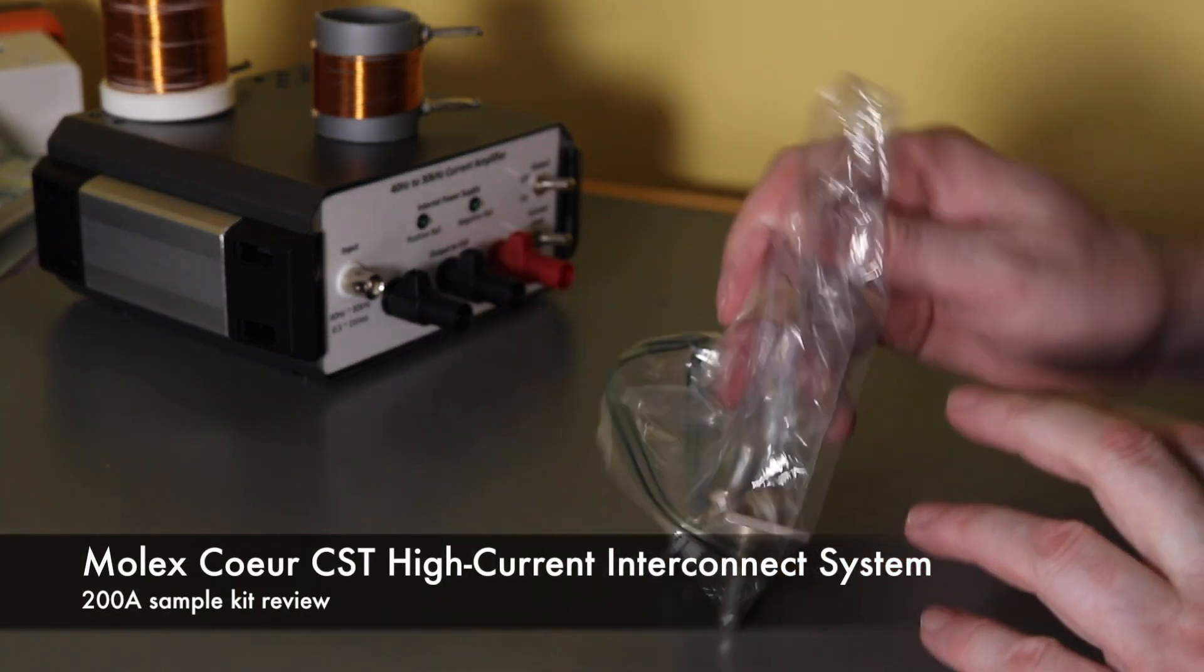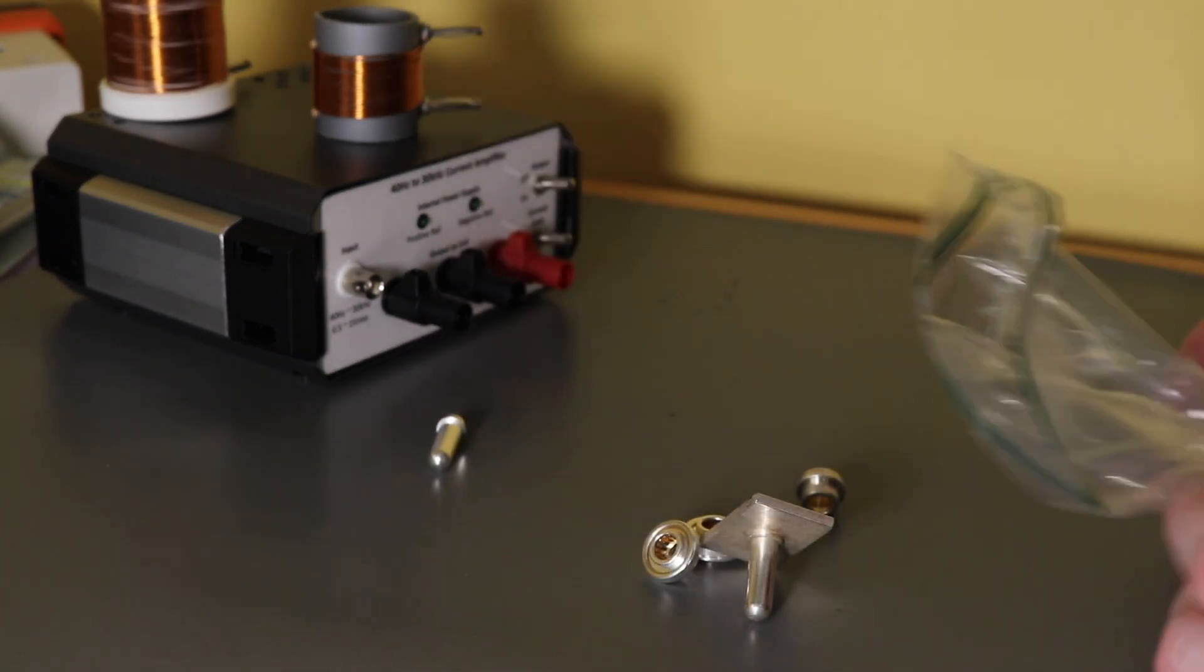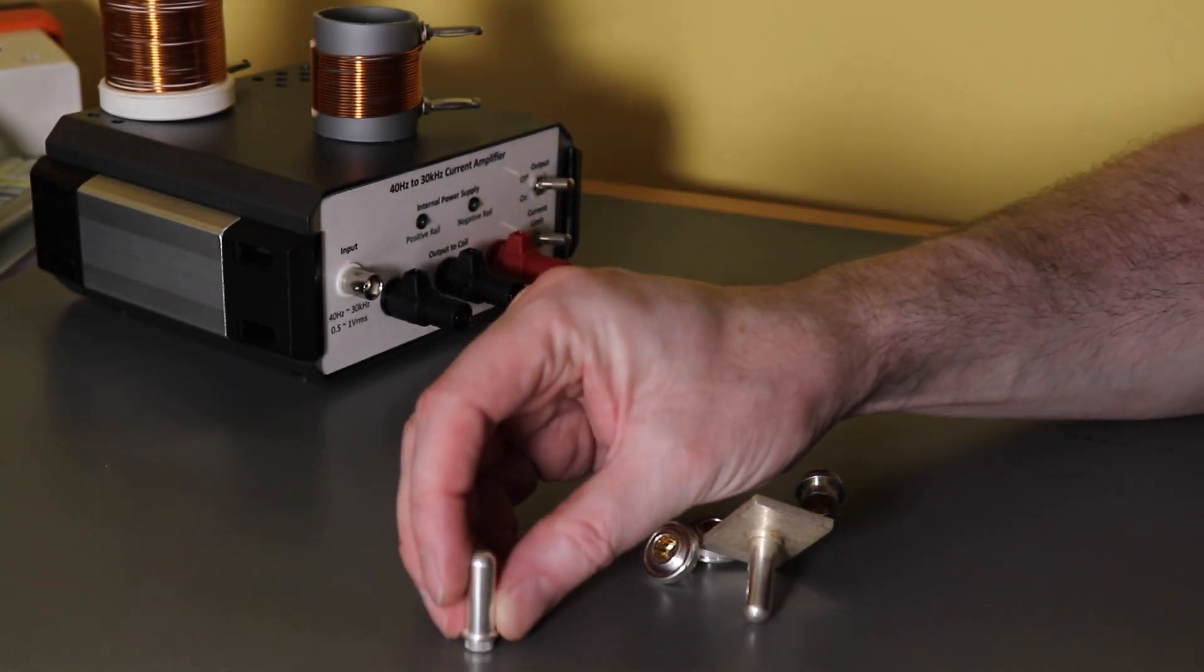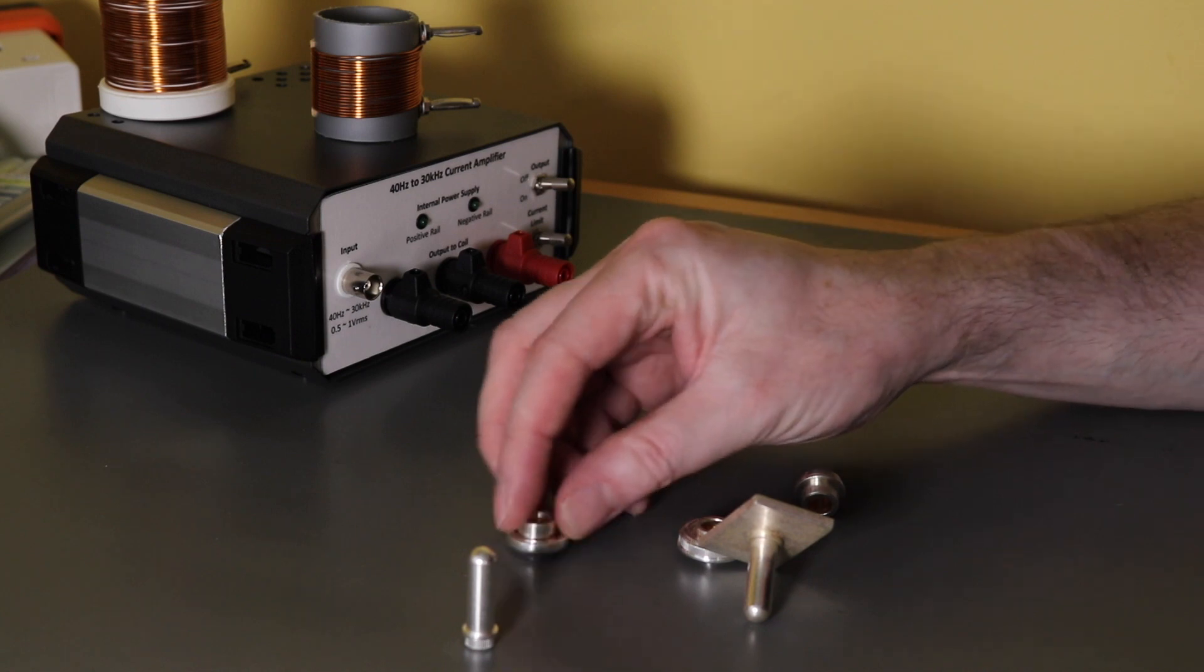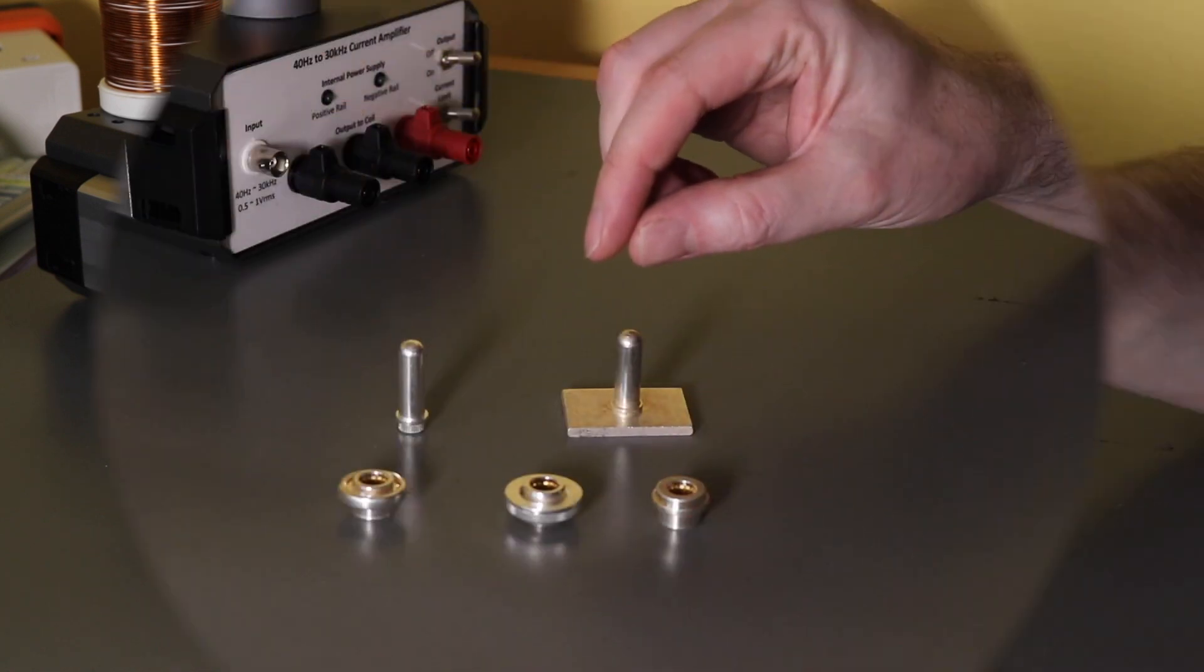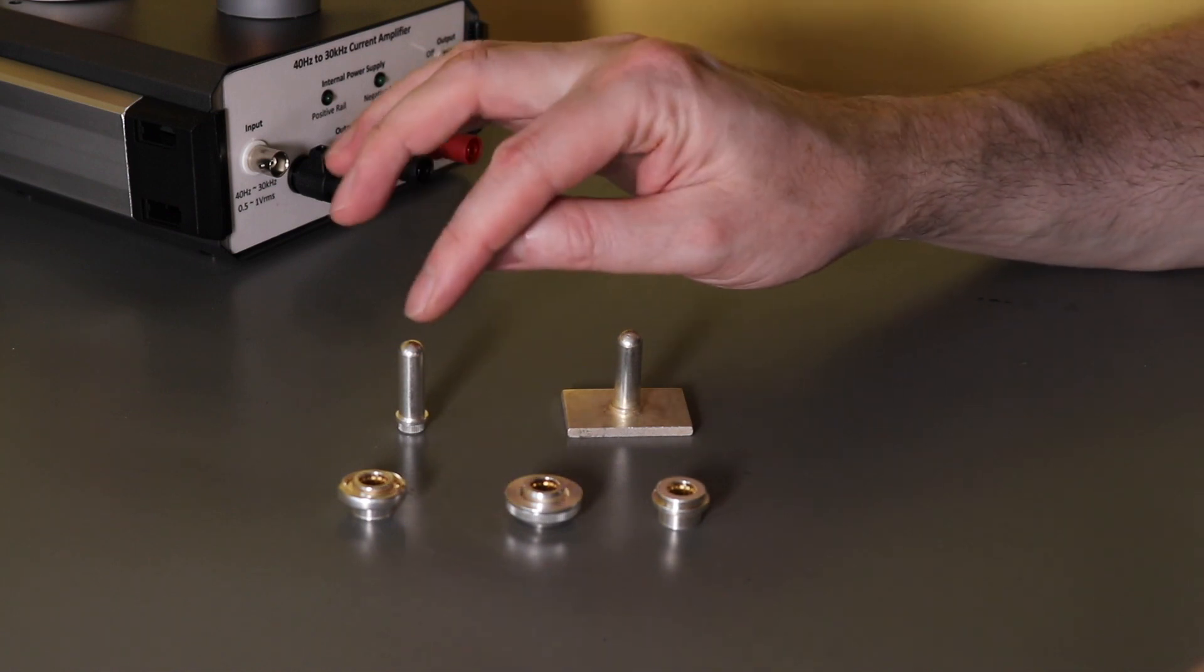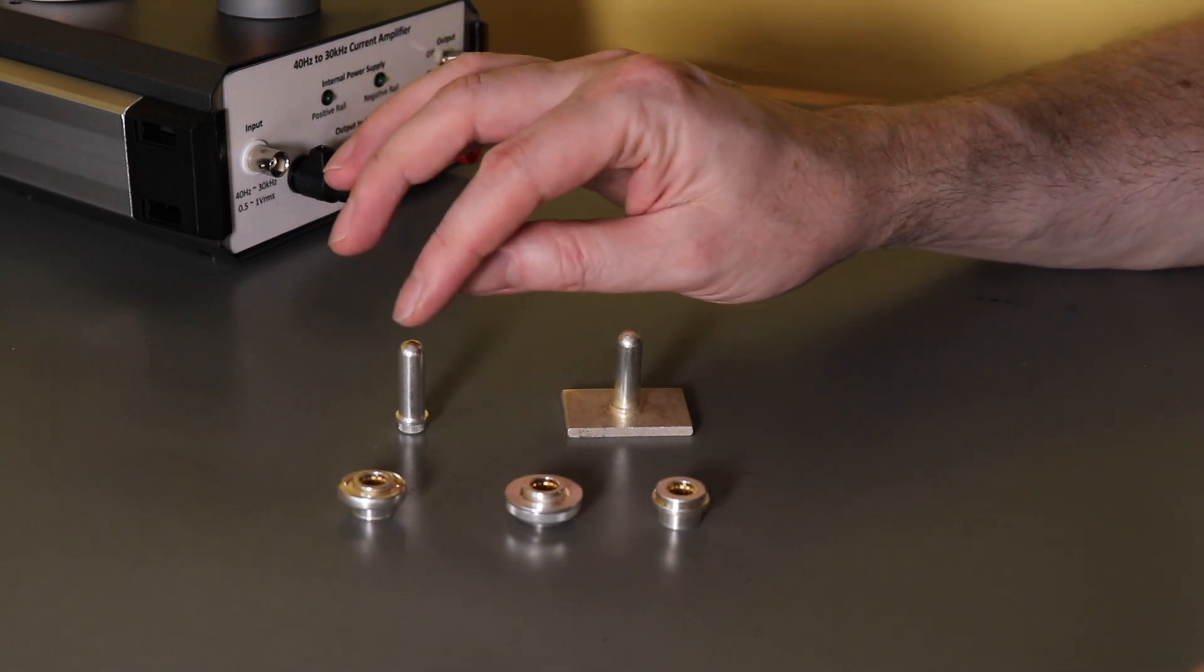So these are the Molex 200 amp connectors that I've been sent to take a look at. This is the little sample kit that's turned up. The 200 amp rated, 600 volt, and this is the 8mm system, so 8mm diameter pins.